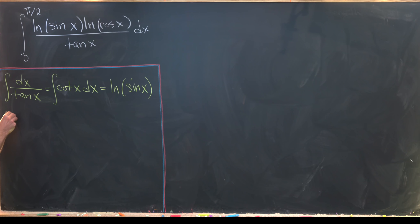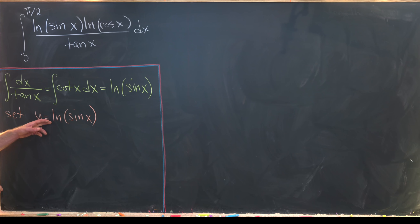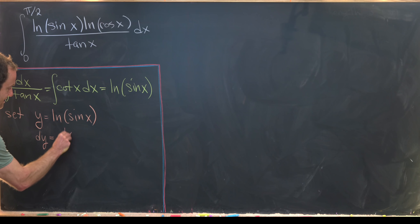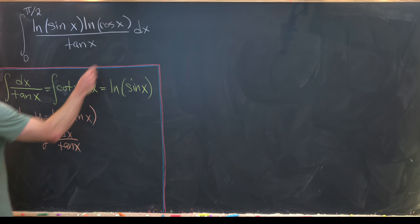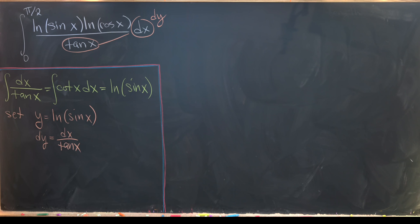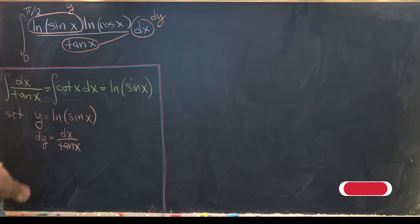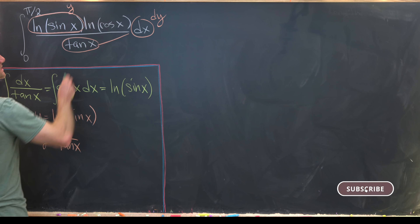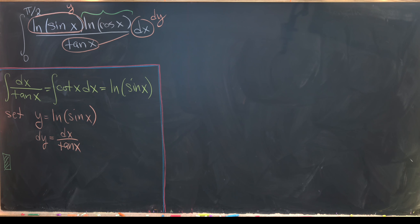We set y equal to the natural log of sine of x. Then, by the argument in yellow, dy is equal to dx over tangent of x. Notice that this term will be gobbled up by the dy, and this other term will be gobbled up by the y. All that's left is to determine what's happening with the term I've overbraced in green, so let's put a little green box down here to do that calculation.